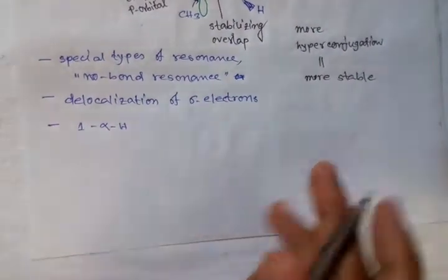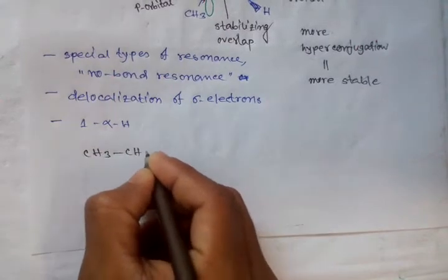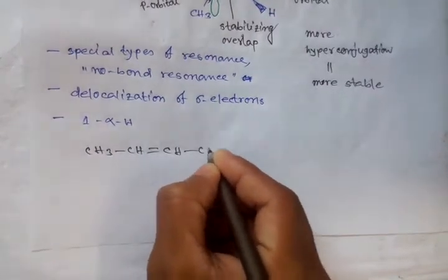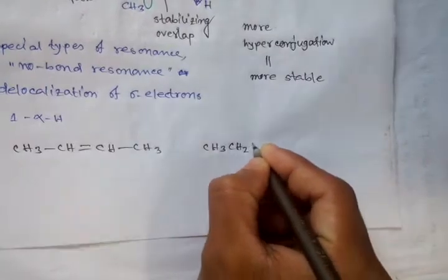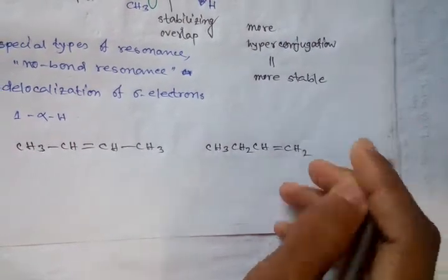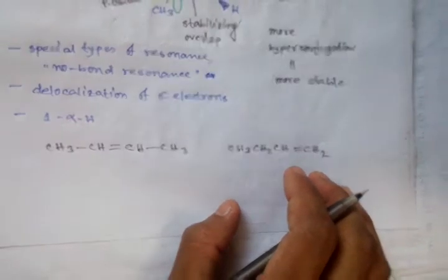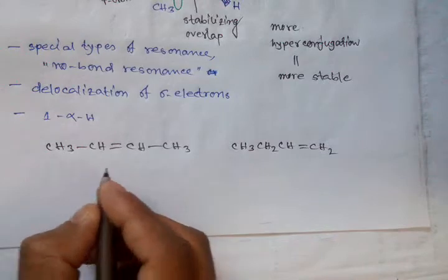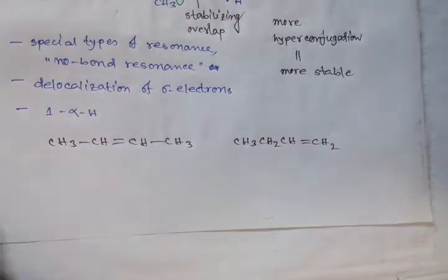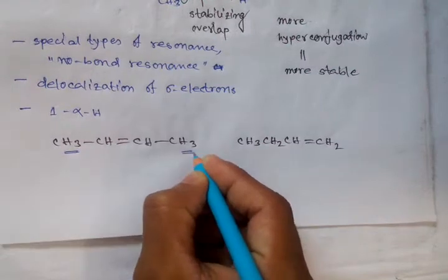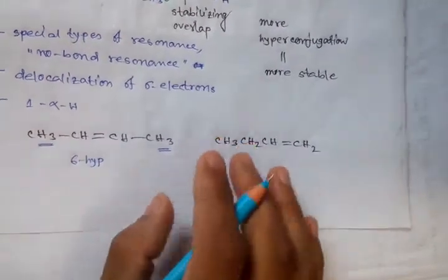For example, consider CH₃–CH=CH–CH₃ and another compound CH₃–CH₂–CH=CH₂. Which one is more stable? If we study hyperconjugation, then we can determine this easily. The first compound has 6 hyperconjugations — these 3 hydrogens and these 3 hydrogens are responsible for hyperconjugation, so 6 hyperconjugations are possible.